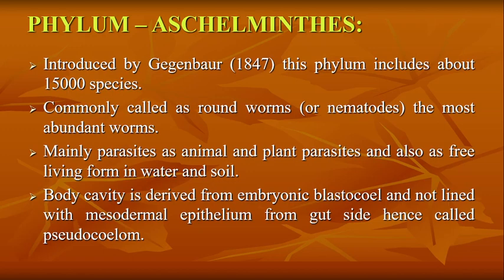These are the most abundant worms found everywhere in the world. These roundworms or nematodes are mainly parasites — animal parasites or plant parasites — and also exist as free-living forms in water and soil.